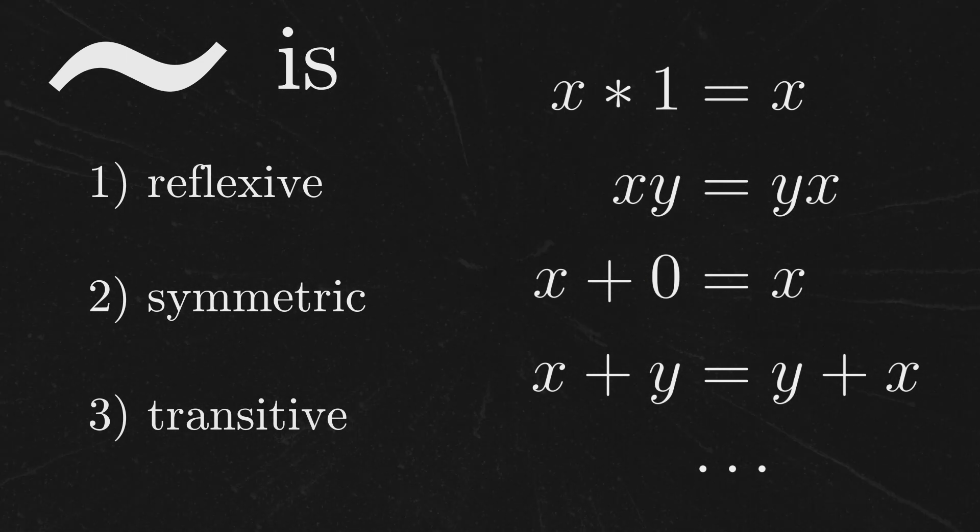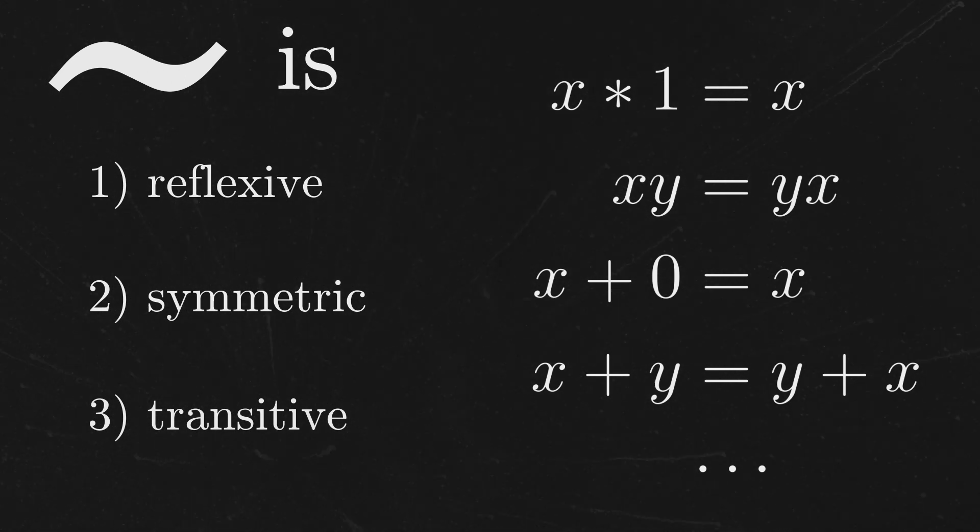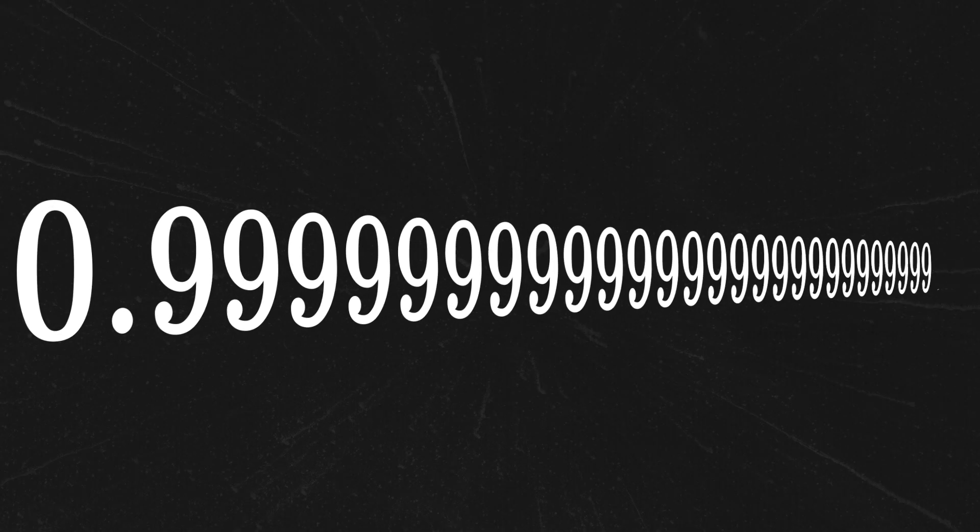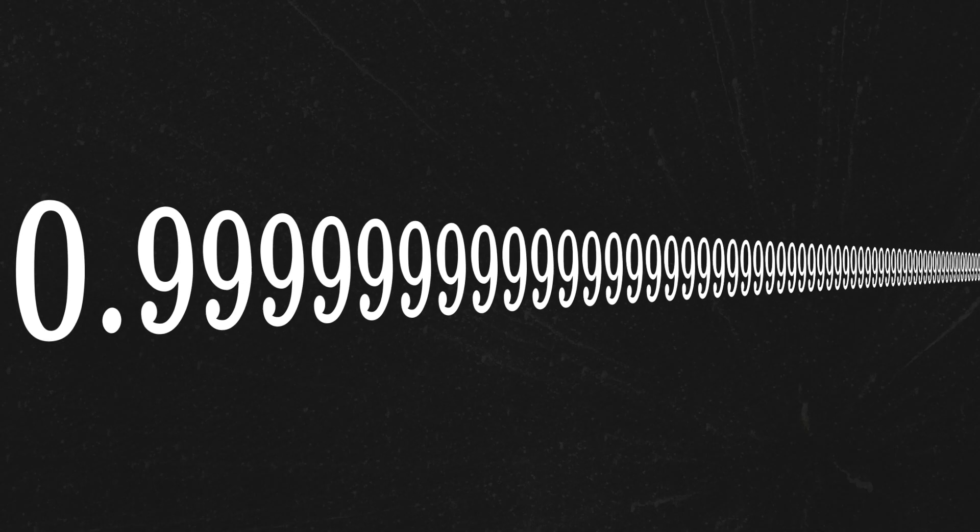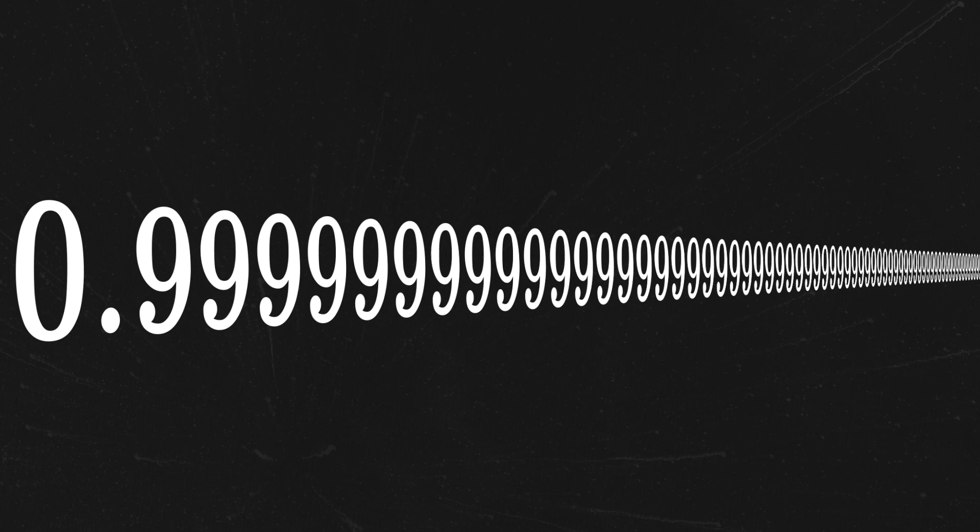Before we conclude, I do want to leave you with one final note. It's partly because of this definition that there's so much confusion surrounding the statement 0.999 repeating equals 1. For starters, what does 0.999 repeating even mean? It's not particularly rigorous to say, oh, the 9s just go on forever.